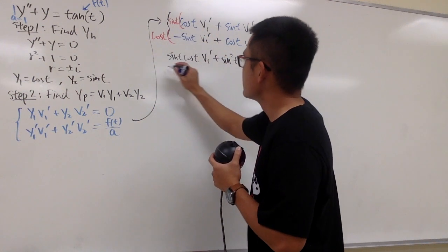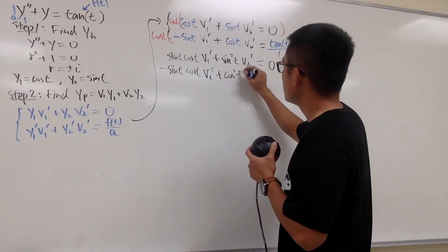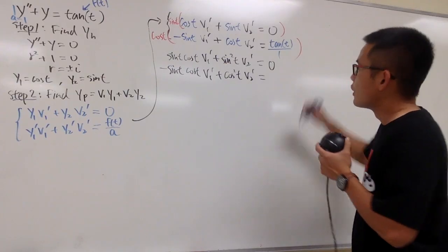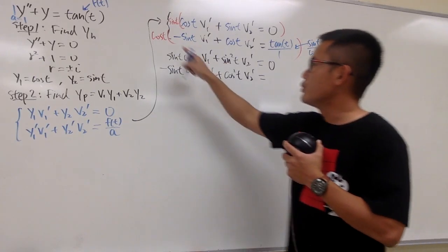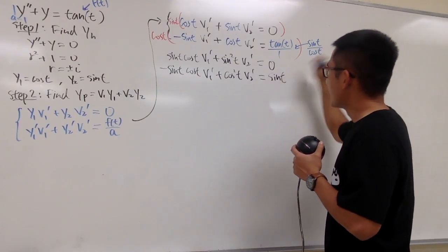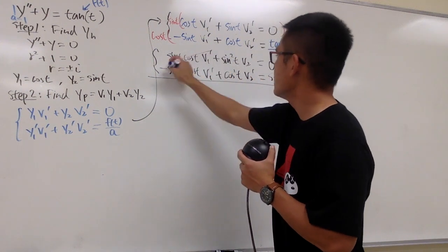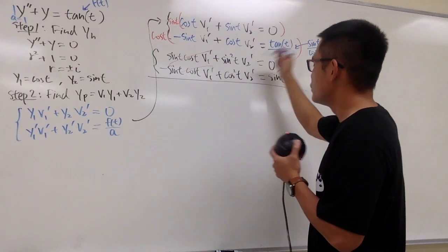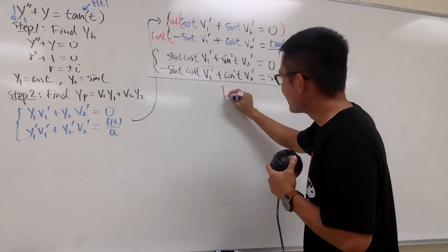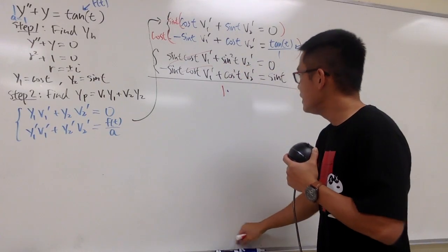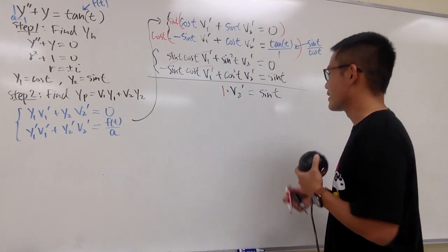Adding them up, the φ1' terms cancel. Since sine squared t plus cosine squared t equals 1, we get 1 times φ2' equals sine t — because cosine t times tangent t equals cosine t times (sine t / cosine t) which simplifies to sine t.